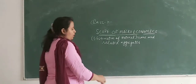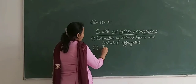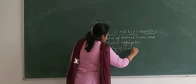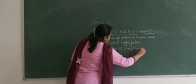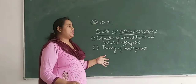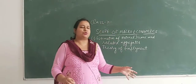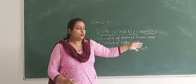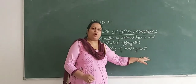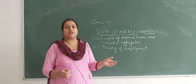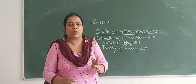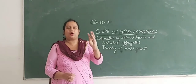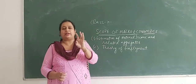Next is the theory of employment, a chapter of macroeconomics in which we discuss the Keynesian theory. J.M. Keynes is the father of macroeconomics. We discuss income, employment, and output. There is a complete unit on income, employment, and output in your book, which will carry 10 marks in your final exams.